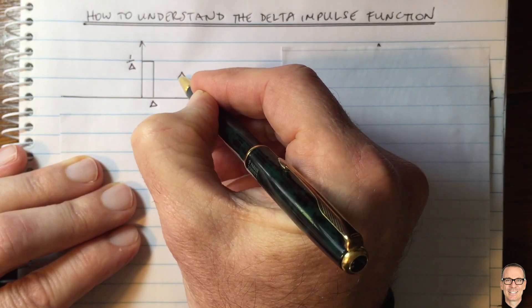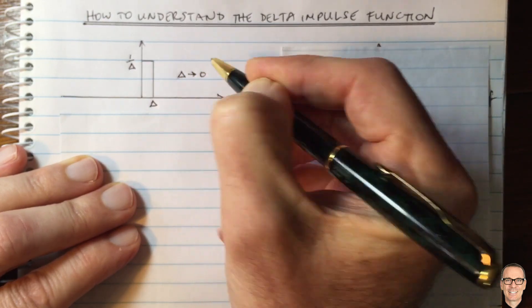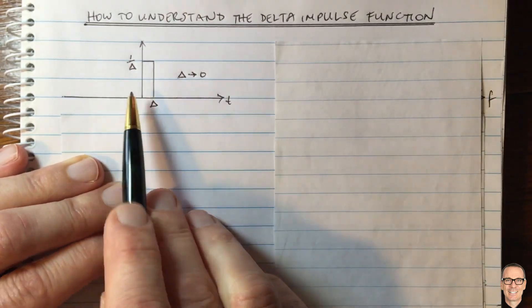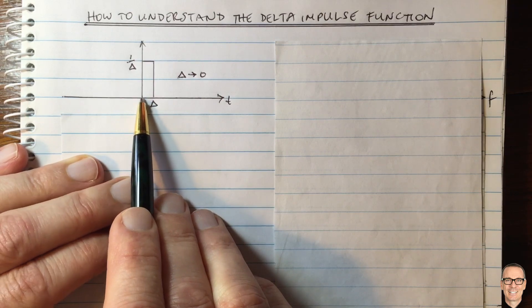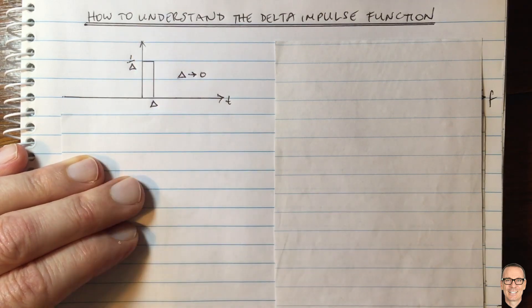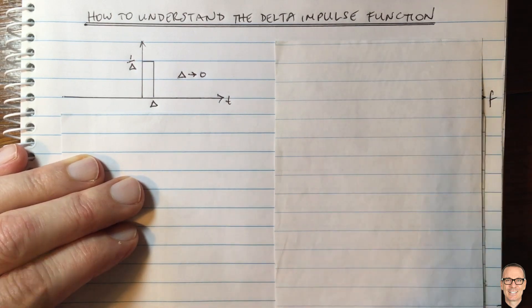And then we look at it as delta goes to 0. So as delta goes to 0, this becomes infinitesimally narrow and infinitely high. And that is the way to think about the delta impulse function.